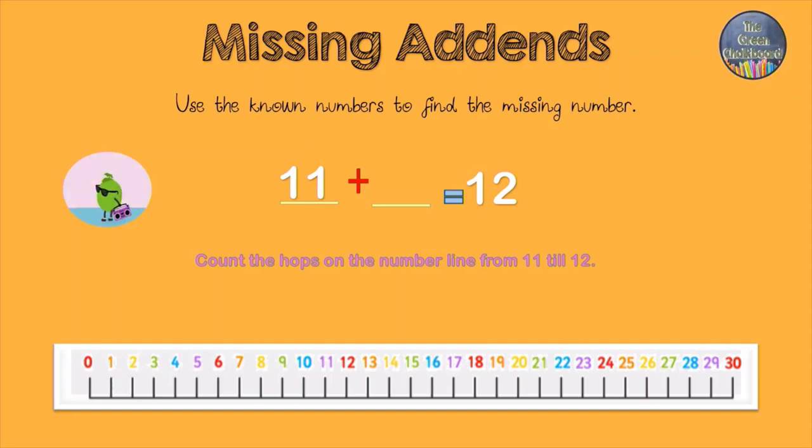Count the hops on the number line from 11 to 12. It is 1 hop.